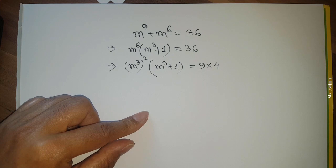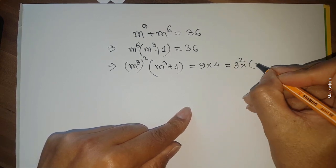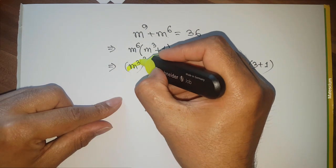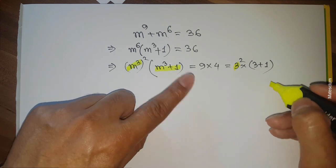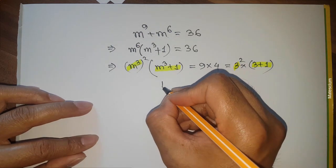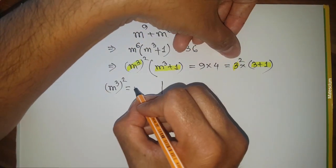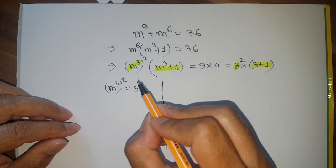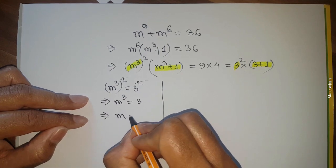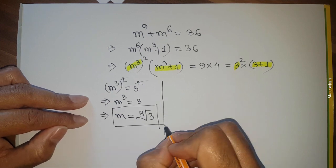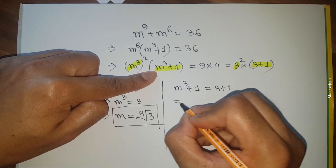Again I rewrite the right-hand side: 36 = 9 × 4 = 3² × (3 + 1). We have something-squared times something-plus-1 on both sides. The first solution is (m³)² = 3², so the squares cancel and m³ = 3, giving m = ∛3.